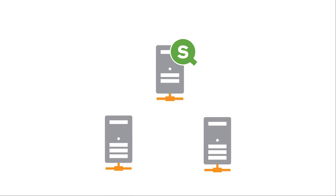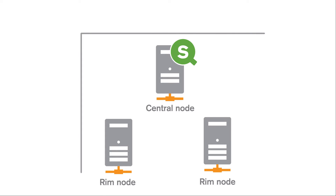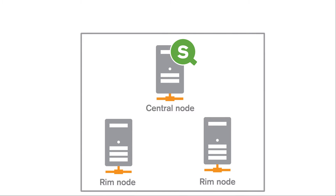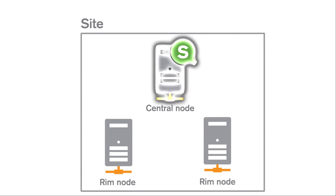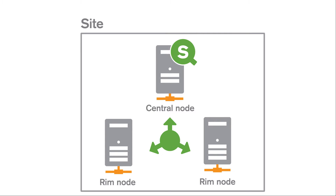ClickSense features a distributed architecture that consists of one or more nodes, that is, server machines, that together form a site. One node assumes the role of the central node, which is used as the central point of control.